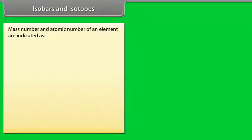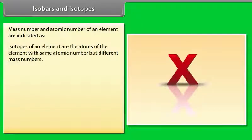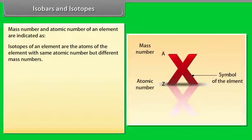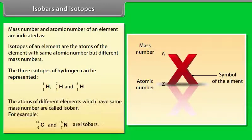Isobars and isotopes: Isotopes of an element are atoms with the same atomic number but different mass numbers — for example, the three isotopes of hydrogen. Isobars are atoms of different elements that have the same mass number.